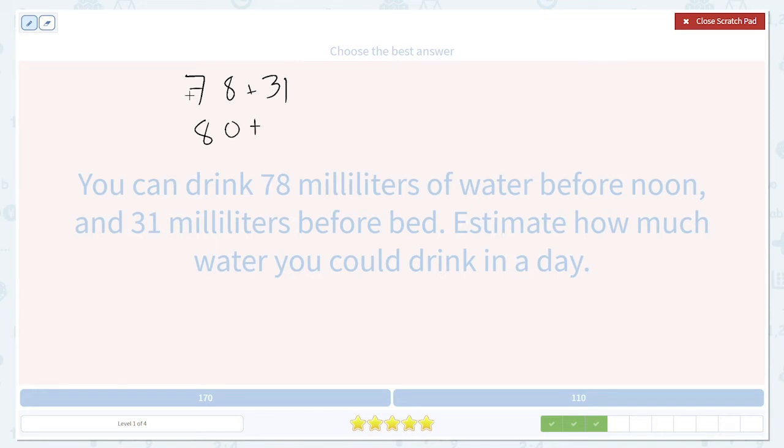31 rounds down to 30 because one is less than five. So our total 80 plus 30 is 110.